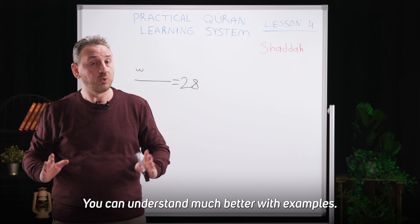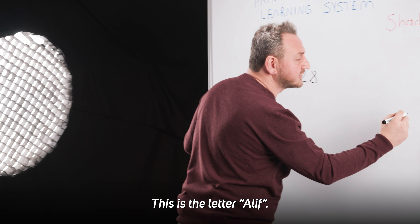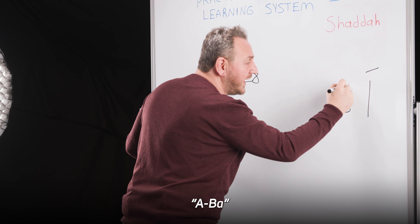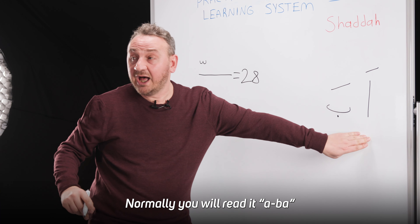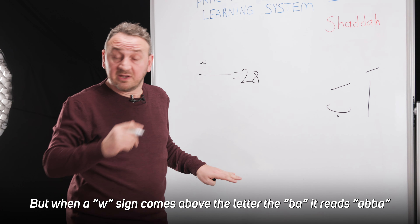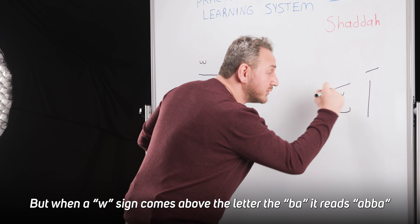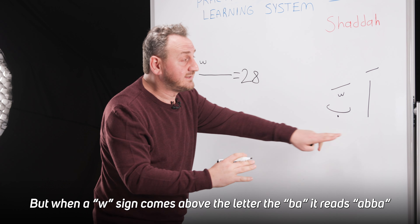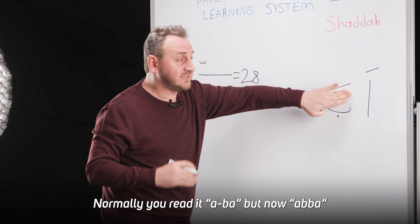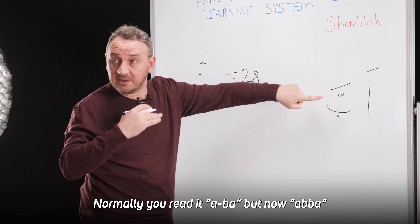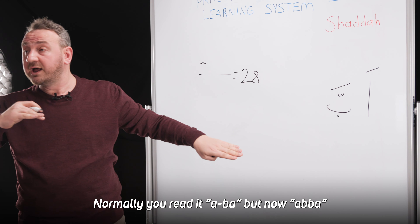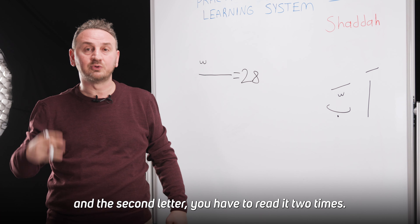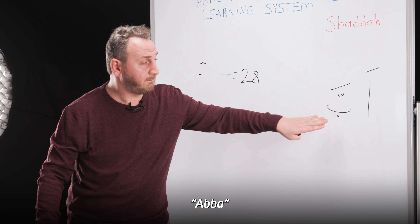You can understand much better with examples. This is the letter Alef. This is the letter B. Normally, you read it A-B. But when a W sign comes above the letter B, it reads E-B. It attaches itself to the previous letter, and the second letter you have to read two times: A-B.